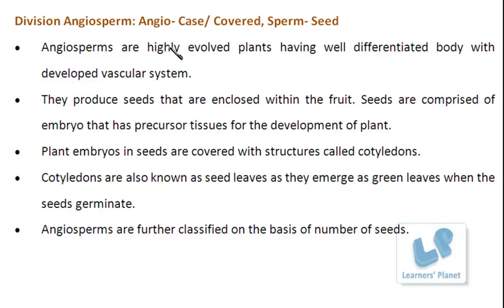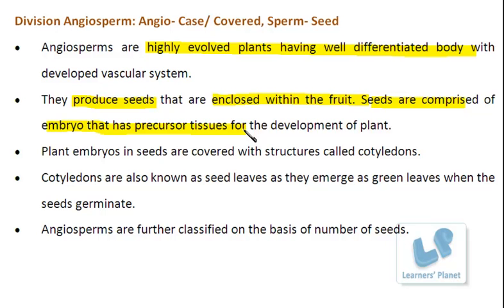The next division is Angiosperms. These are said to be the highly evolved plants, having a well-differentiated body and well-developed vascular system. Seeds produced in this group are always enclosed within the fruit. The seeds contain embryos inside the cover. These embryos are enclosed inside structures known as cotyledons. There are different types of seeds in which the number of cotyledons varies — they can be either a single cotyledon or two cotyledons.